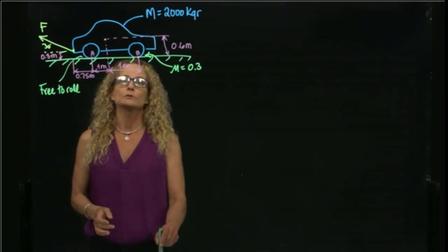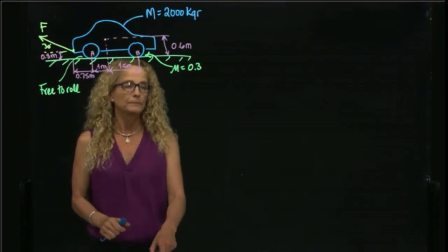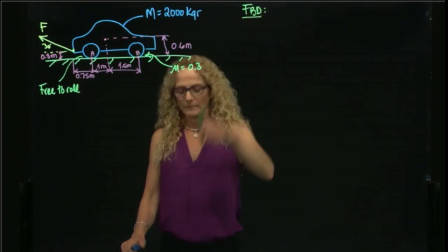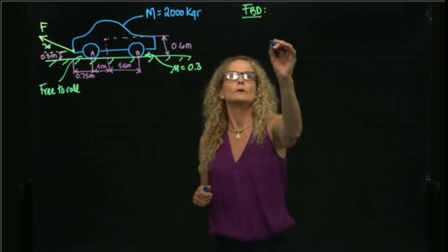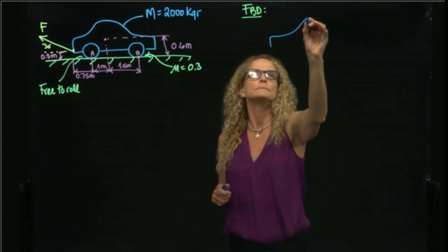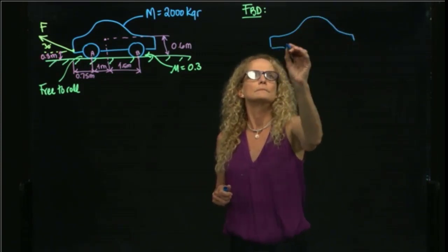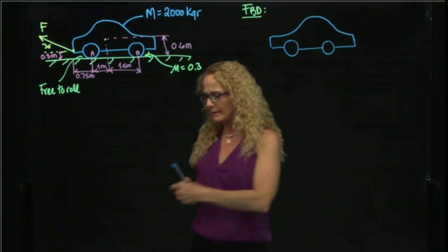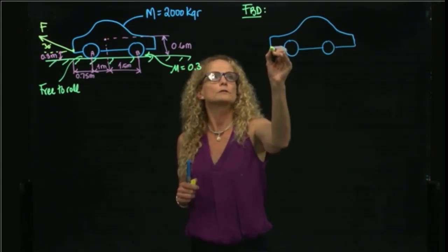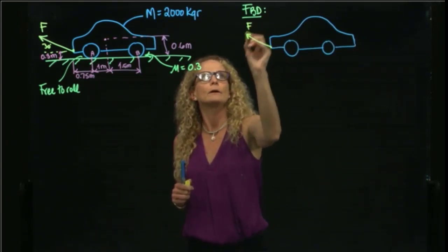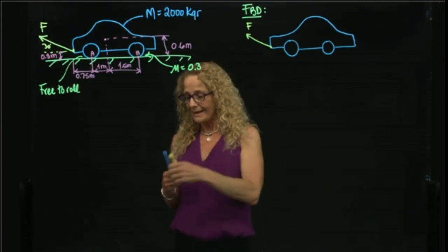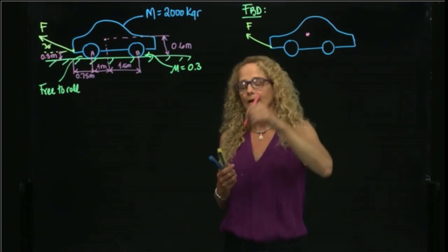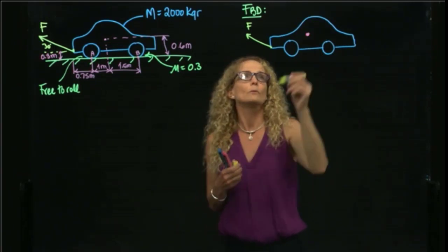The first thing, always, is to find our free body diagram. We draw our car, and since we have the force F that is being applied — which is unknown — and then they give us the position of the center of mass, and there goes the weight.